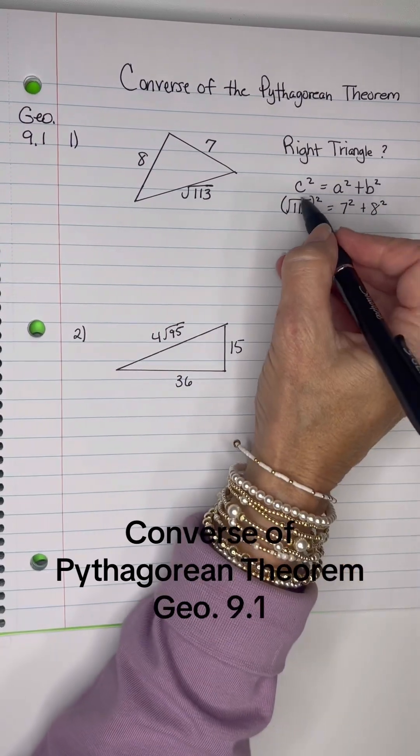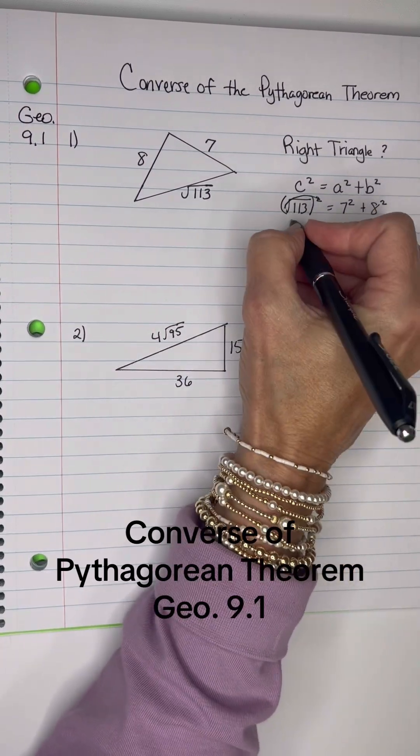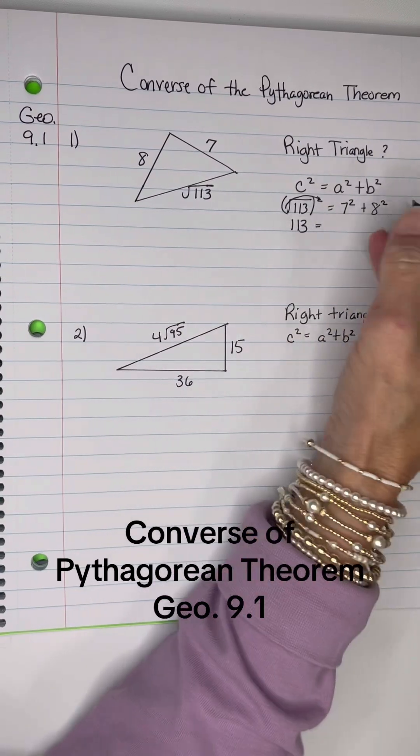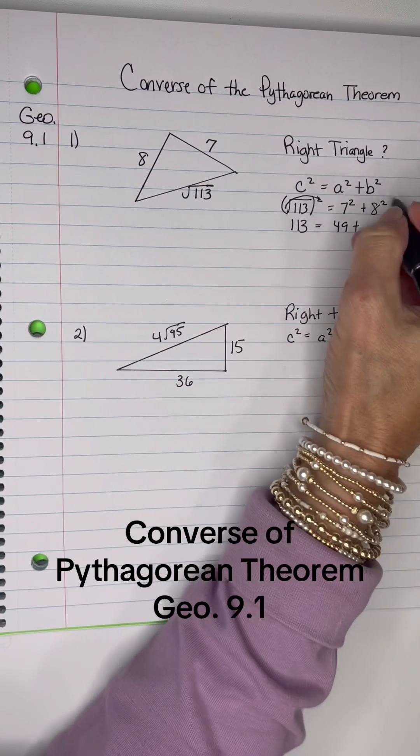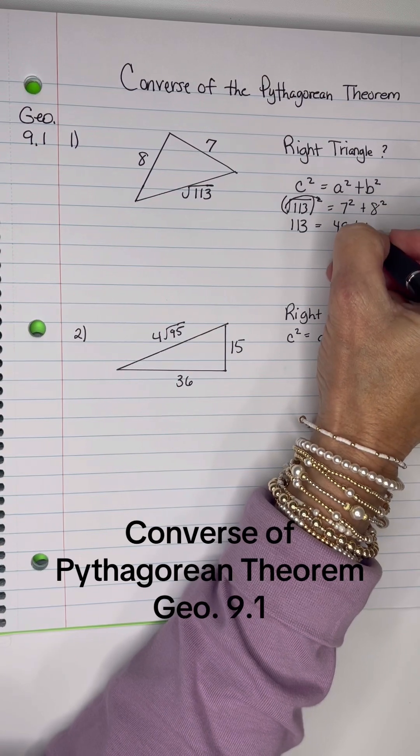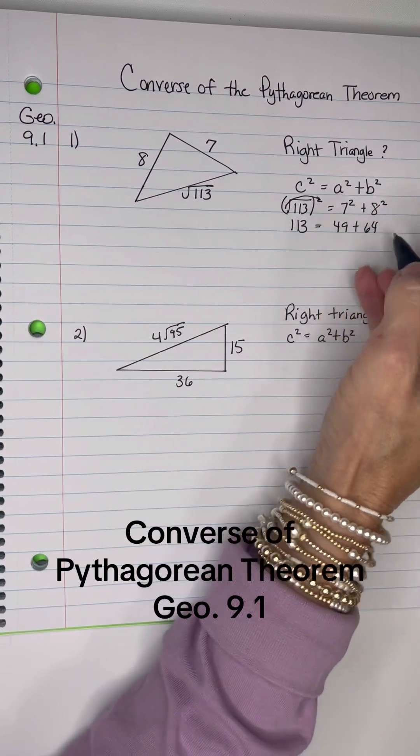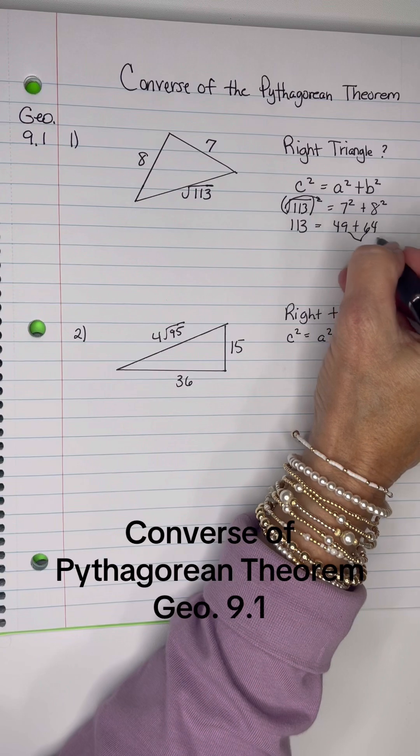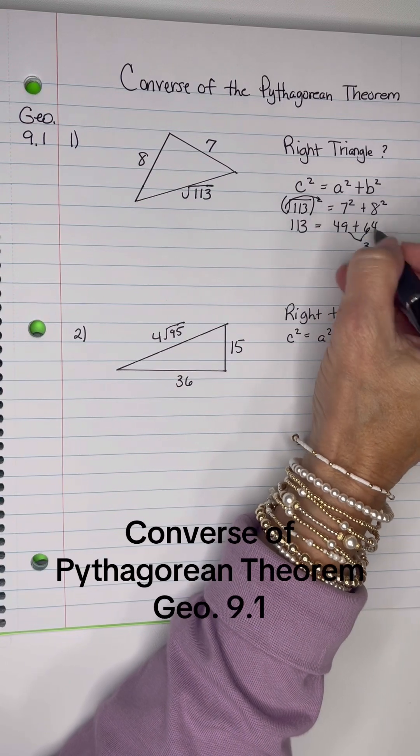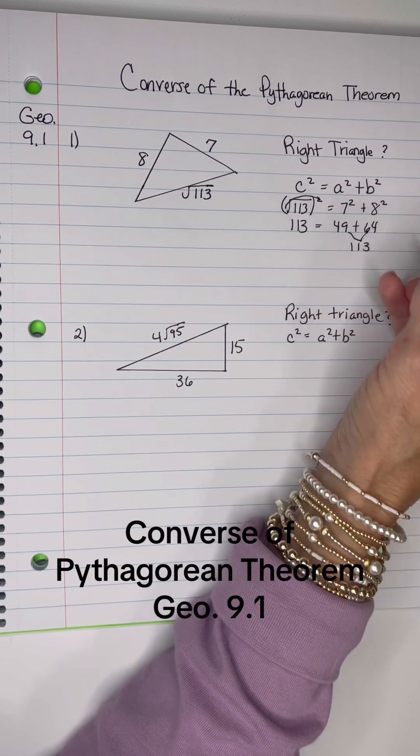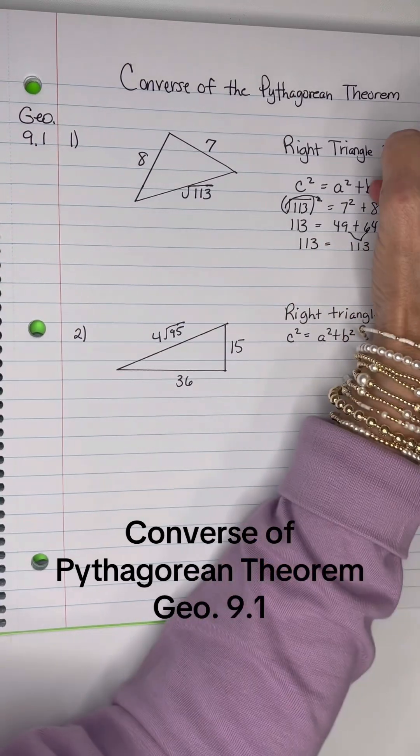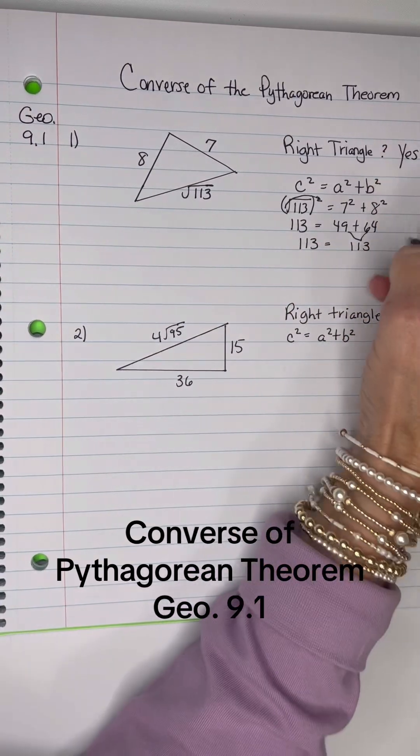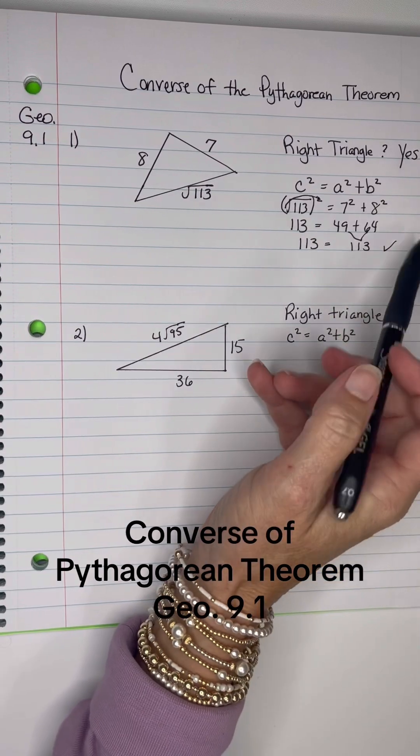All right, this square cancels the square root out, and we've got 113 here, and then 7 squared is 49 plus 8 squared is 64, and if we add these two together, we get 113. 113 does equal 113, so yes, this is a right triangle, the Pythagorean Theorem works.